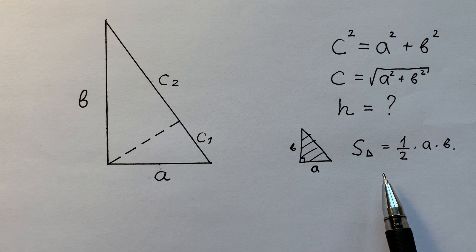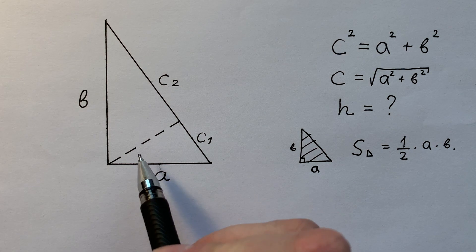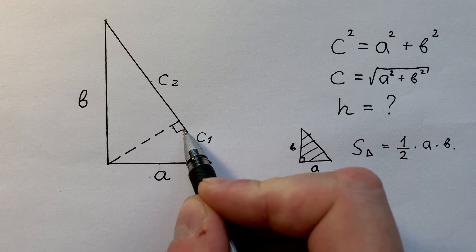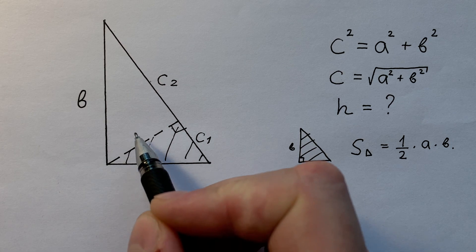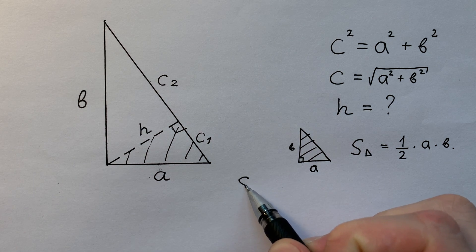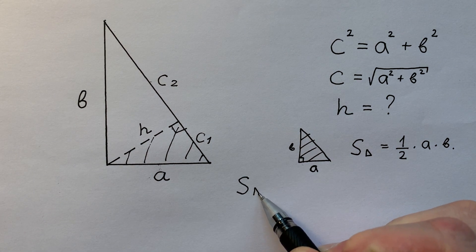Using this formula, let's try to find the area of a right triangle with cathetus C1. Knowing that the second cathetus equals H, we understand the area of this triangle.